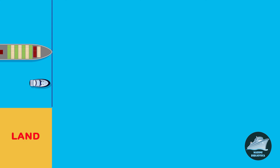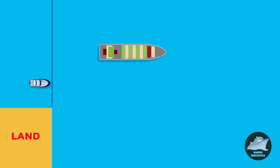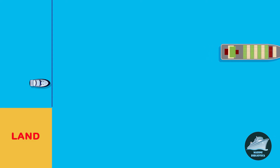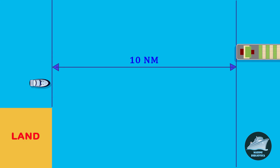The ship is passing near to land, and there is a boat near to the land which is not moving. In one hour, the ship will cover 10 nautical miles with respect to the land as well as to the floating boat. This is because the boat will maintain its position as there is no wind or current.